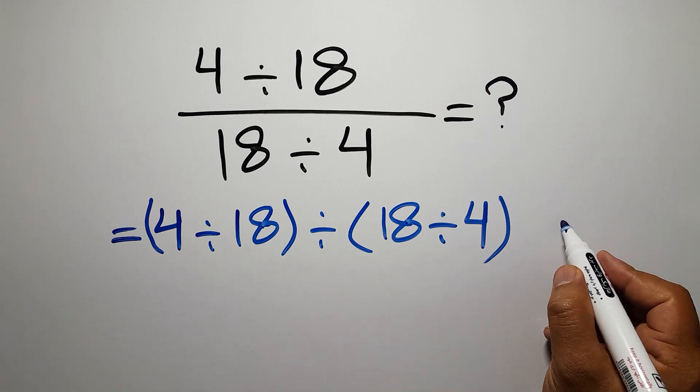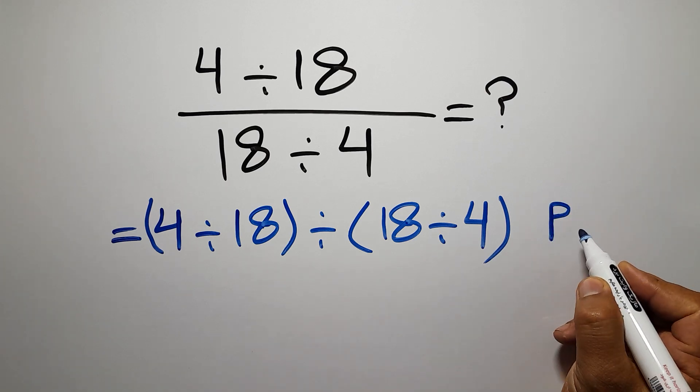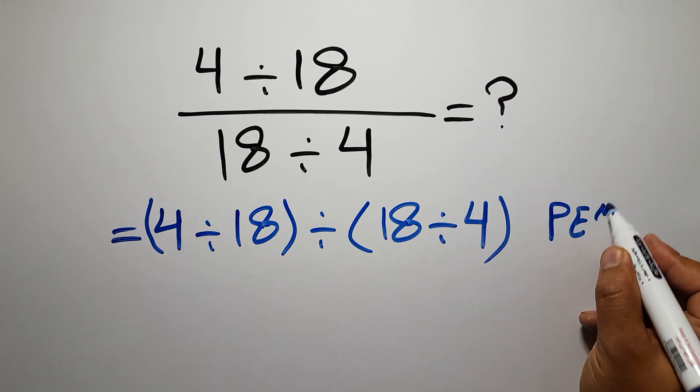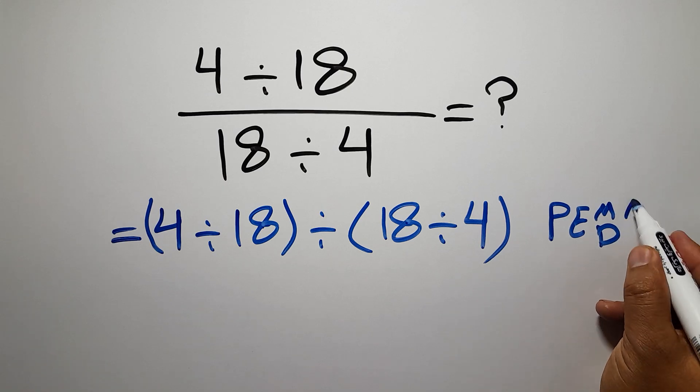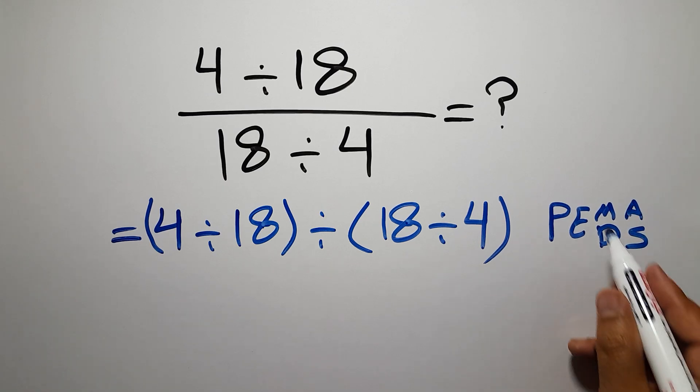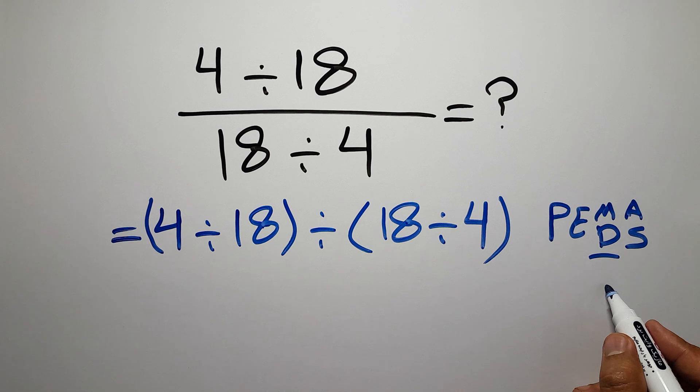According to the order of operations, first we have to do parentheses, then exponents, then multiplication or division, and finally addition or subtraction. Remember that multiplication and division have equal priority, and we have to work from left to right, and the same applies to addition and subtraction.